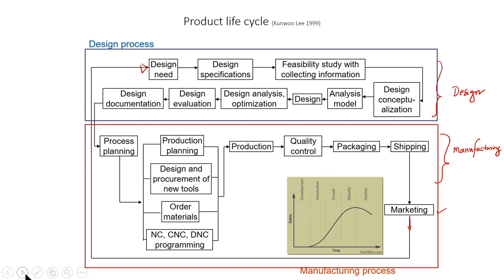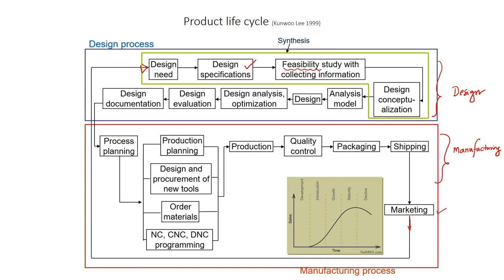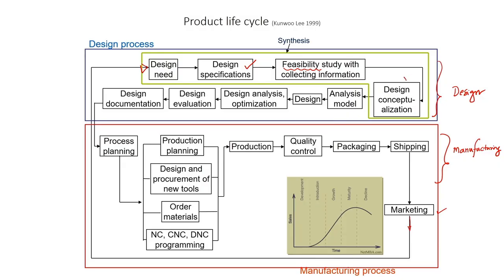We get the design need from the marketing team and customers, specify those requirements as numbers or specifications based on customer needs. After that we carry out a feasibility study — whether it is possible to manufacture the product or modify an existing design as per customer requirements. Then we revise or modify the design and generate the revised concept, which we call design conceptualization. These four activities are clubbed together and we call that process design synthesis.